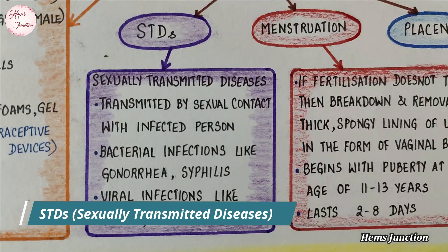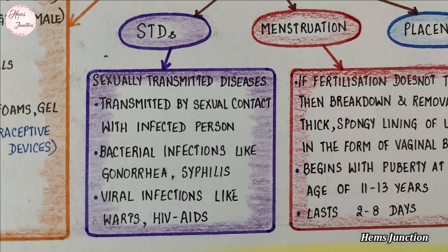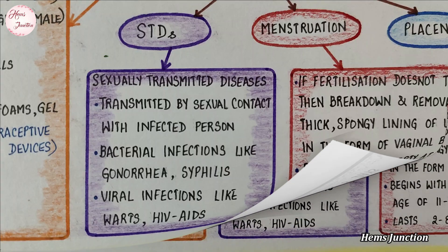Sexually transmitted diseases are those transmitted by intimate contact between a healthy person and an infected person. These include bacterial infections and viral infections.